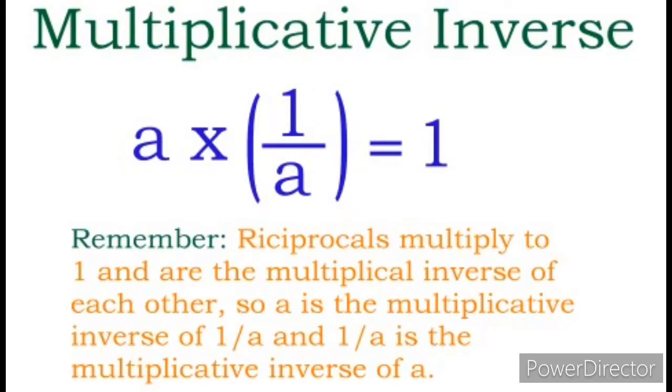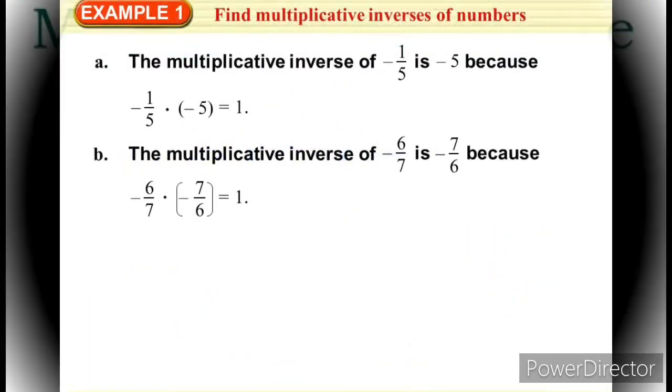Next is your multiplicative inverse. a into 1 by a equals to 1, that is your formula. Reciprocals multiply to 1 and are the multiplicative inverse of each other. So a is the multiplicative inverse of 1 by a, and 1 by a is the multiplicative inverse of a. It is a reciprocal. Clear? Formula, you have to learn it. See the example of this.